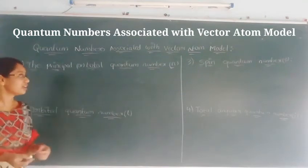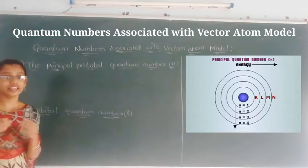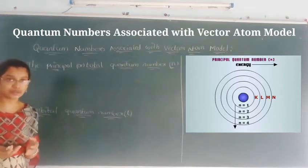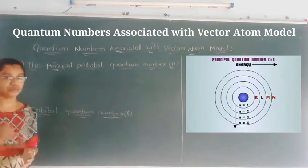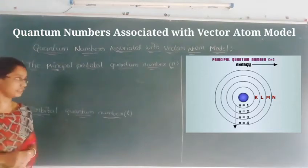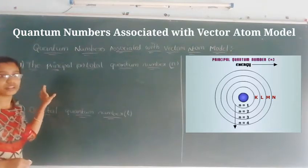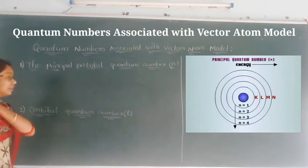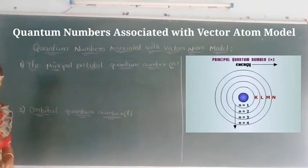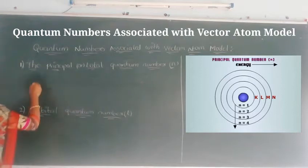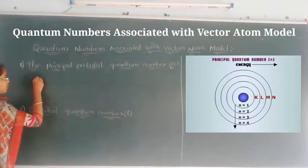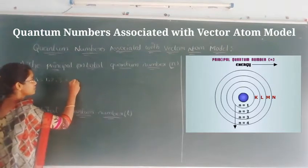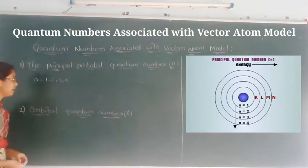The principal quantum number describes the orbit, or shell, in which an electron is located. According to the Bohr-Sommerfield theory, the values of n are any positive integer values — that means n equals 1, 2, 3, 4, and so on, up to infinite values.